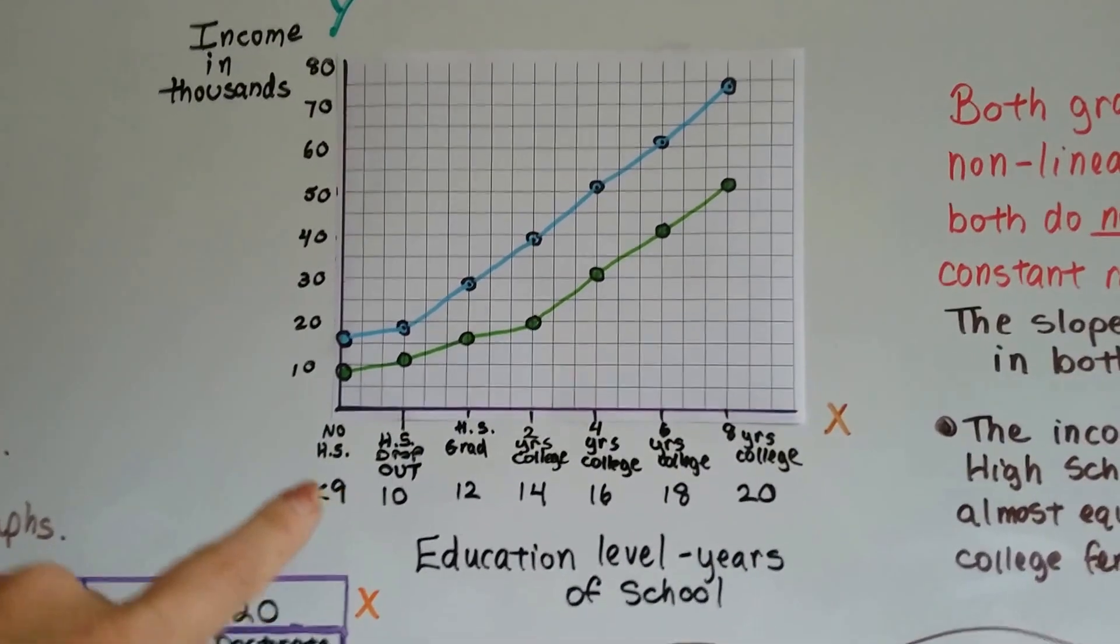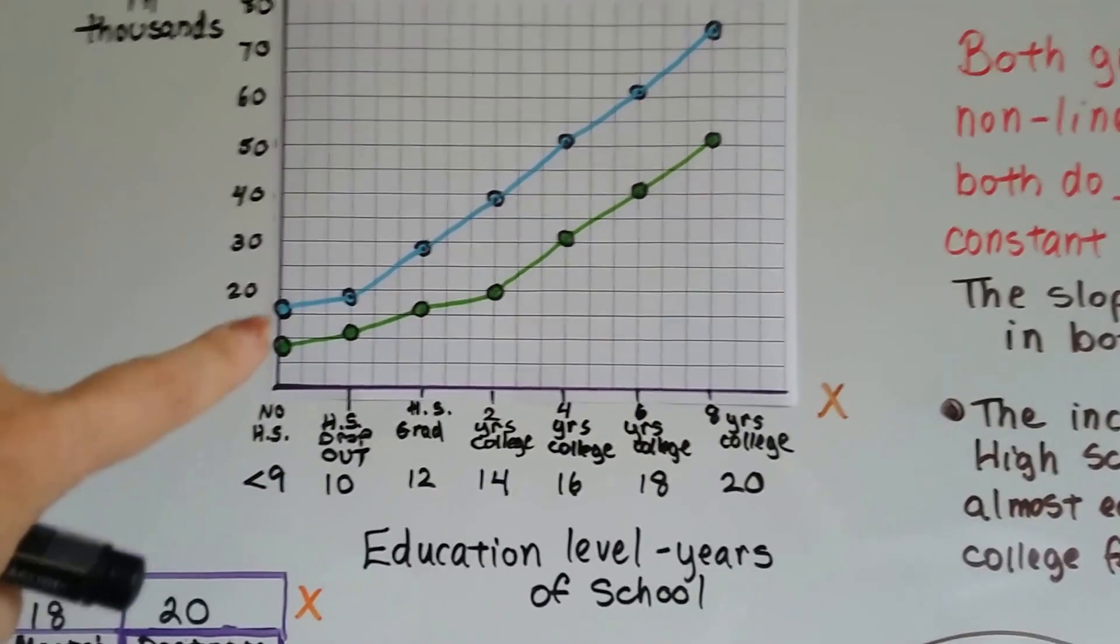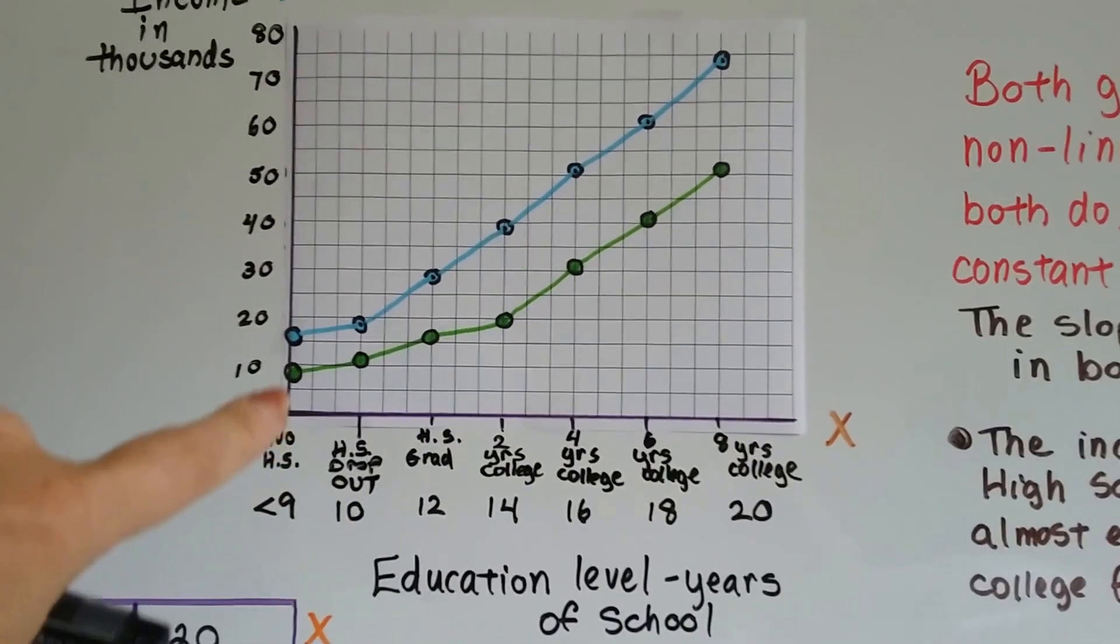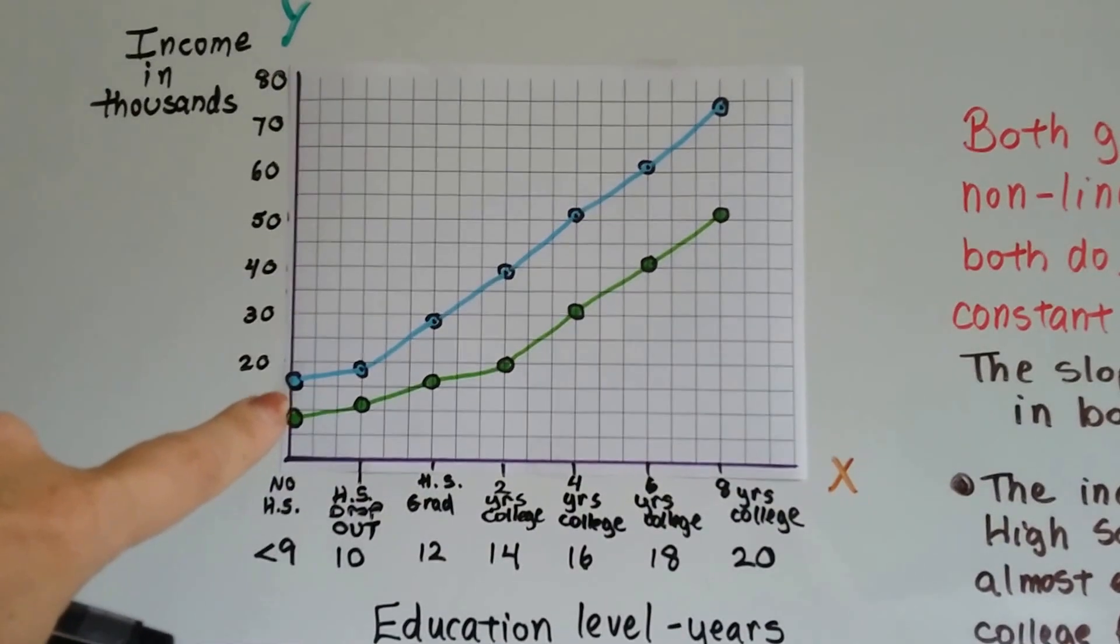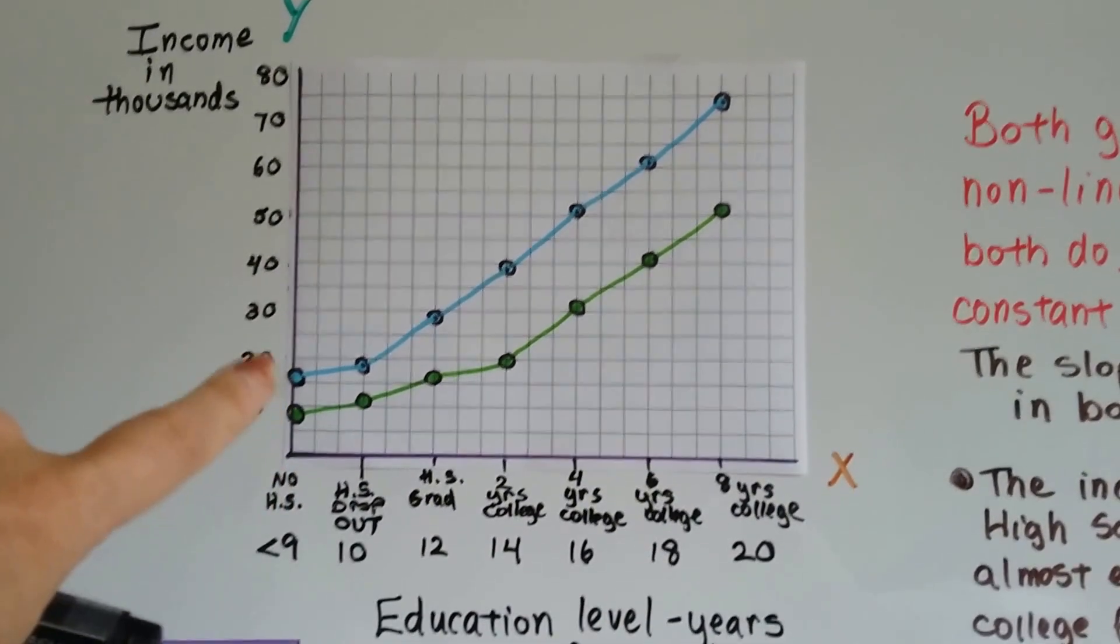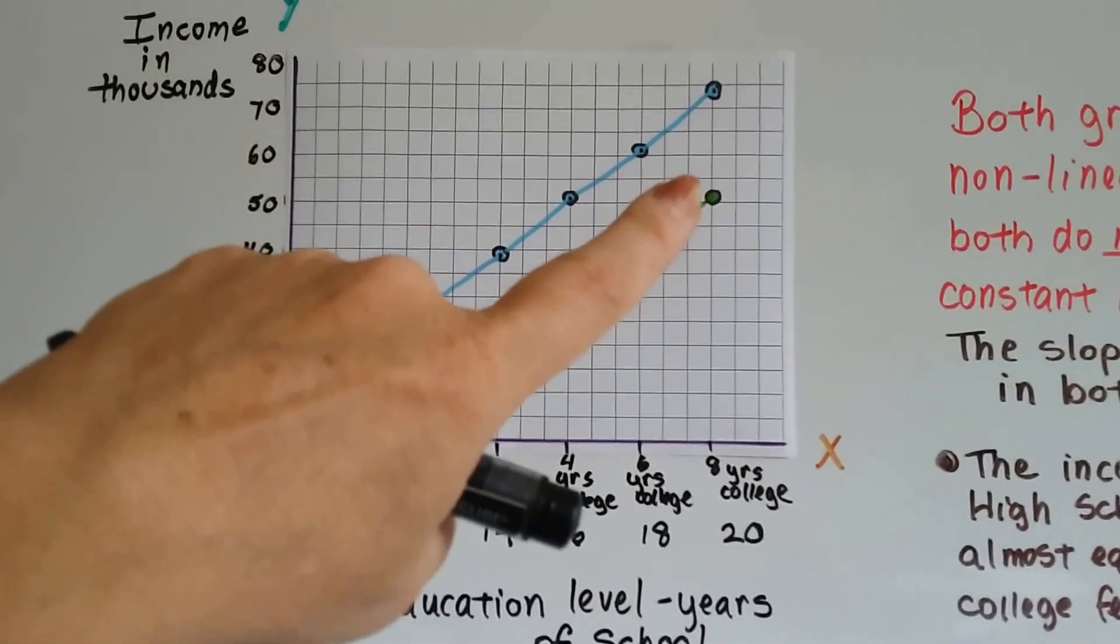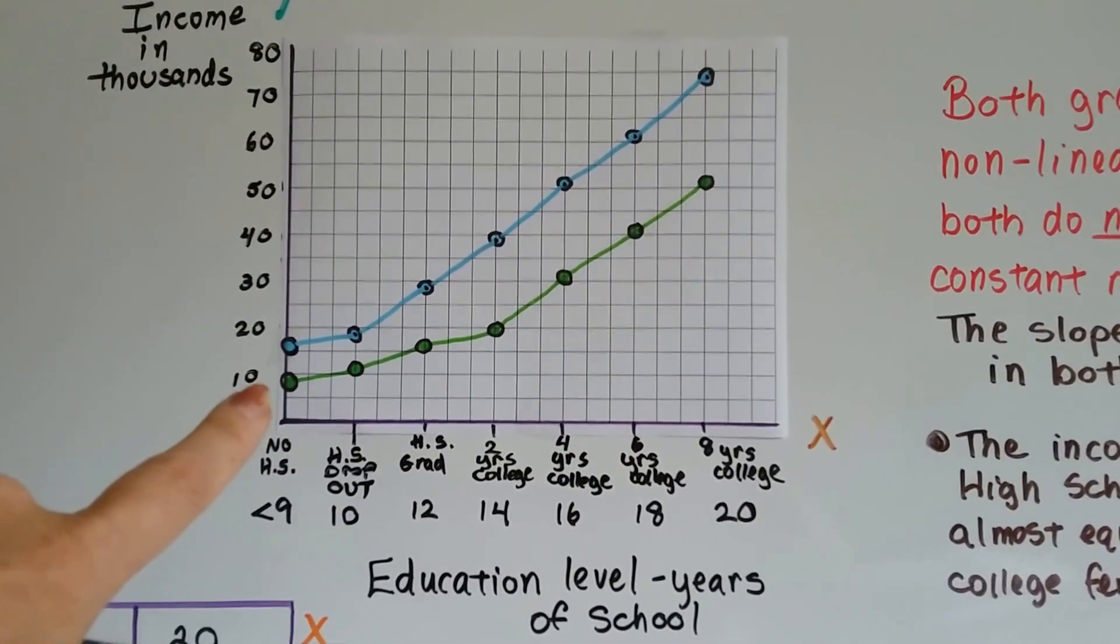You can see, for a male or a female that didn't go to high school at all, they had less than nine years of education. Maybe they just finished middle school. That income compared to someone who's got a PhD is very, very different.